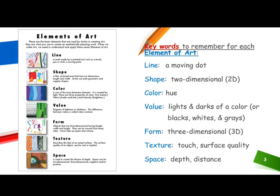Elements of art: these are the basic elements used by artists in creating art. They are what you use to create aesthetically pleasing work. When we make art we need to understand and apply these seven elements. Number one — line: this is a mark made by a pointed tool such as a brush, pen, or stick — a moving point.